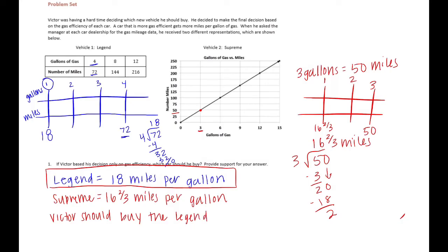Because it gets, let's see, the difference between 16 and two-thirds and 18 would be one and one-third miles per gallon more than the Supreme.